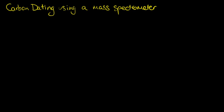In the last video we talked about carbon dating and how it was done originally. Now we have devices called mass spectrometers, or acceleration mass spectrometers, and I'll describe how they work. Using a mass spectrometer, we can use much smaller samples — on the order of milligrams — to find out how much carbon-14 is left, rather than the traditional way of measuring the activity of the sample and waiting for atoms to decay.